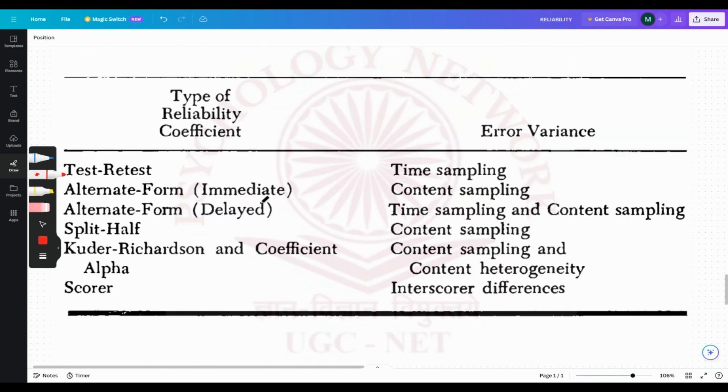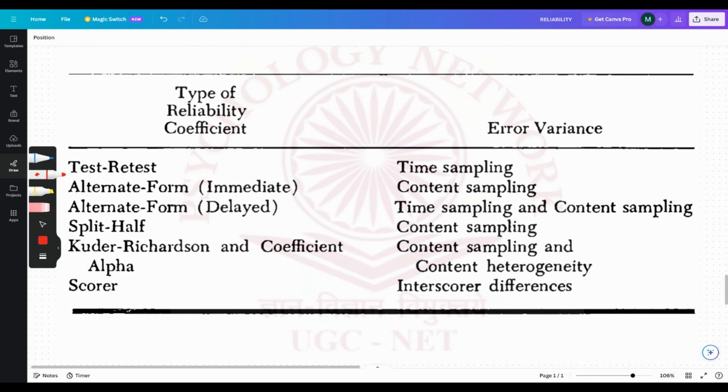I talked about error variance, remember. So what kind of error variance might come up? These reliability methods I just talked about, they are not perfect. There might be some kind of error variance there. The test-retest one might have time sampling as error variance. Alternate form might have time sampling and content sampling. These could be the error variance.